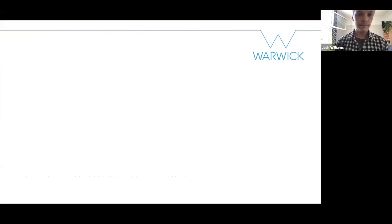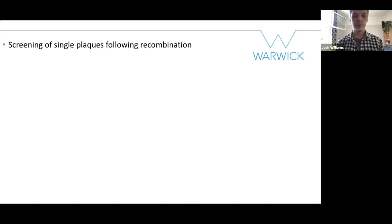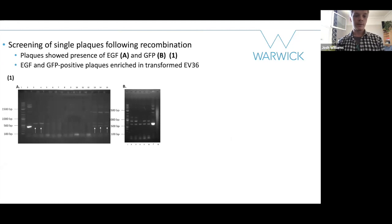Following electroporation of strain EV36, which is the organismal choice for this project — EV36 is a K12-K1 hybrid, essentially a K12 strain that expresses the K1 capsule under the AGL operon — I electroporated the construct into EV36 and infected with wild-type phage to induce homologous recombination. In panel A, you see screens of single plaques for EGF, which produces a band of 400 base pairs, and in B, you see plaques screened for GFP, which produces a band of 600 base pairs. Of the 40 plaques I screened in total, about five were positive for EGF, and I screened those for GFP, which were all positive as you can see in panel B.